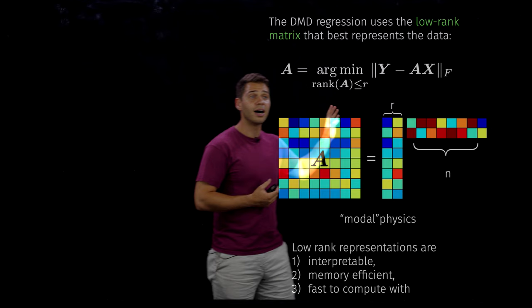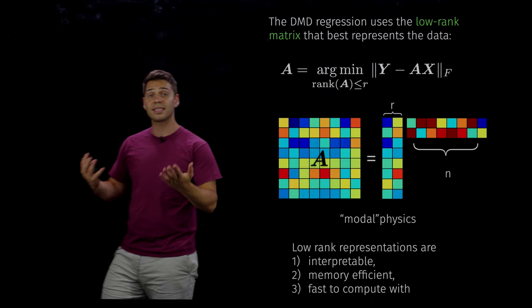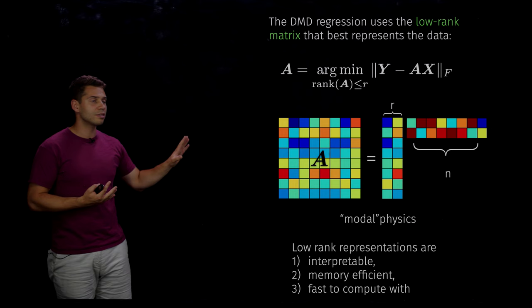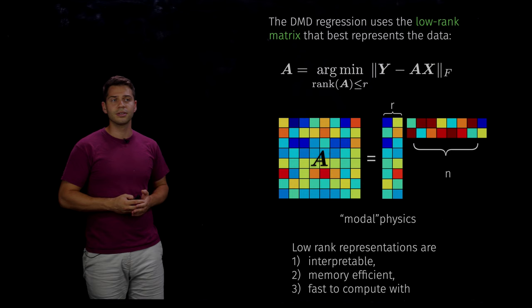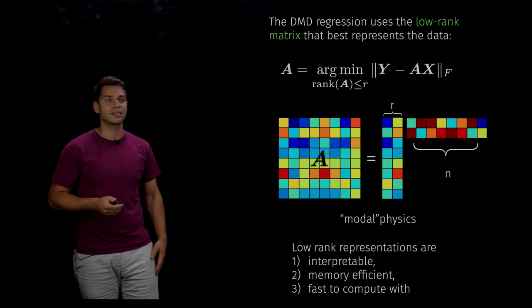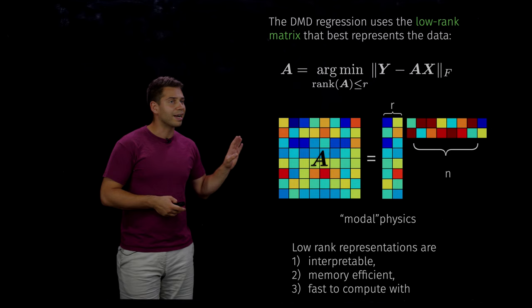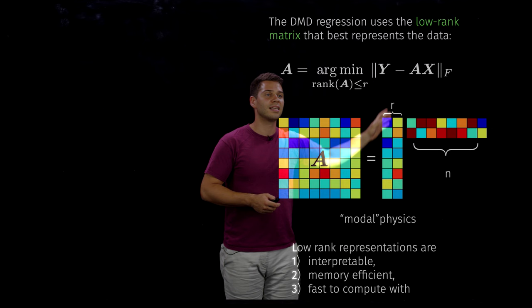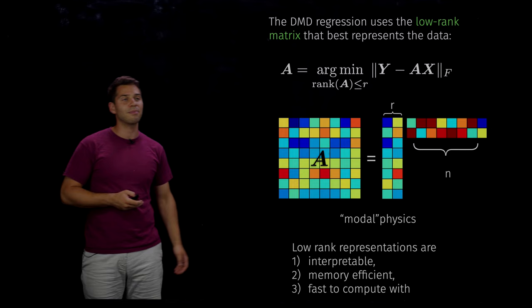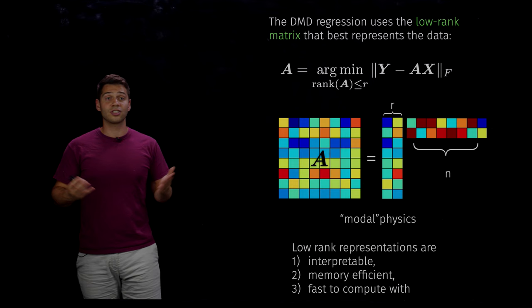Given a target rank R, DMD approximately solves the problem of finding a rank-R or less matrix A that best maps X onto Y — best advancing the data forward in time. Low-rank matrices can be factorized into a set of R columns and R rows, which is representative of modal physics: if a system has a few dominant modes, you only need to understand those modes. Low-rank matrices also have attractive computational properties in terms of memory and speed.